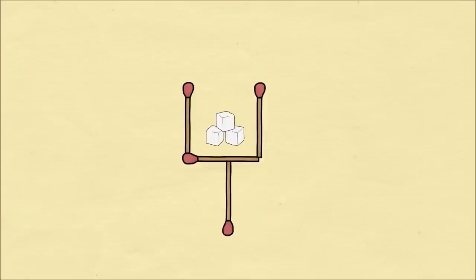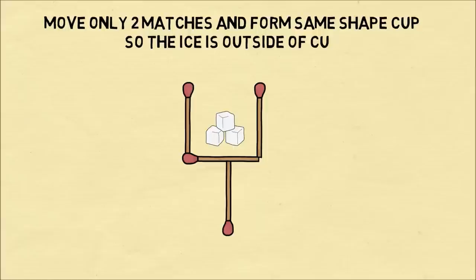The second puzzle, we'll use four matches to create a cup, and inside of the cup we have ice cubes. The puzzle is, you have to move only two of the matches and you still end up with the same shape of the cup, but once you have the solution, the ice will be on the outside of the cup.